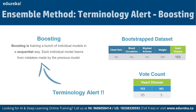Boosting is training a bunch of individual models in a sequential way, where each model learns from mistakes made by the previous one, improving accuracy step by step. For example, we select variables like blood flow and blocked arteries, then identify which variable best separates the samples. If blocked arteries is the most significant predictor, we assign it as the root node. We then repeat this process for each branch node, selecting two random candidate variables and choosing the best one to split samples.